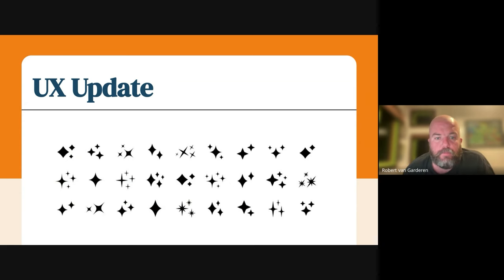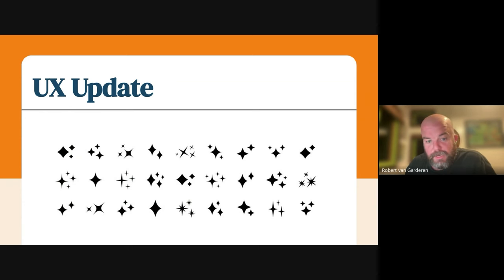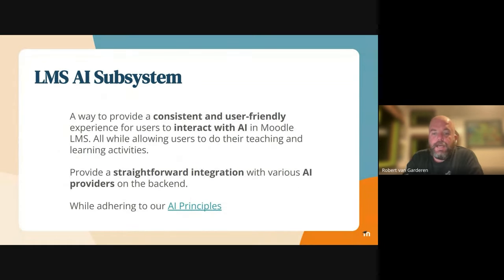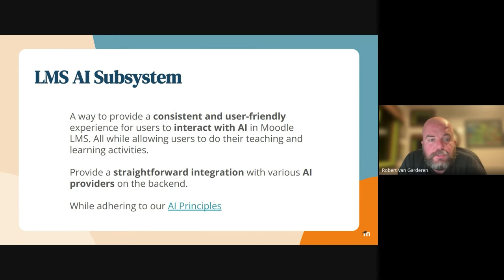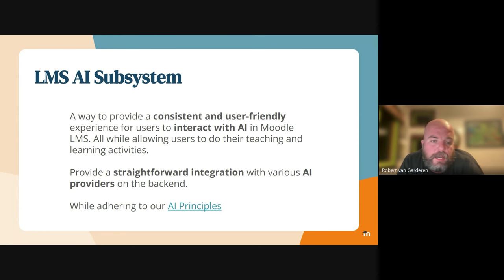We've been working towards an AI subsystem. This image is just of the icon which has fastly risen to be the icon for AI — it's called sparkles, there are many variations of it. Basically, our guiding star is making sure it's a way to provide a consistent and user-friendly experience for users of Moodle, so they can interact with AI and still do the things they need to do: teaching, learning, admin — while providing a straightforward integration with various AI providers on the back end.